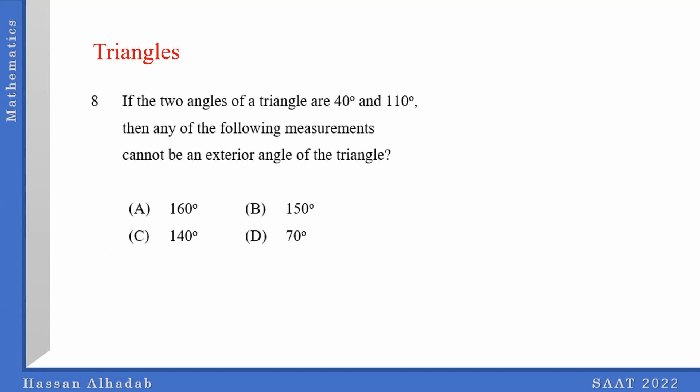The two angles of a triangle are 40 and 110. Then which of the following measurements cannot be an exterior angle of the triangle? Is it A, B, C, or D?